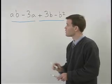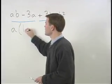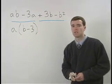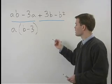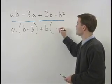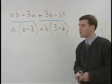For the first two terms, we can factor out an A, which leaves us with B minus 3 inside the parentheses. For the last two terms, we can factor out a positive B, which leaves us with 3 minus B inside the parentheses.